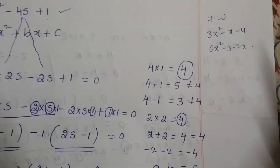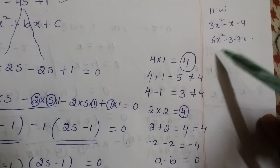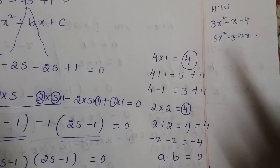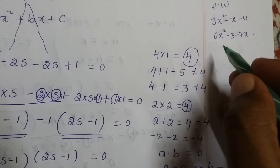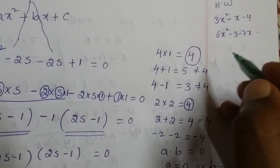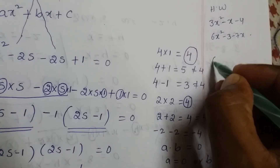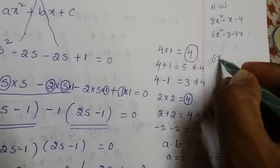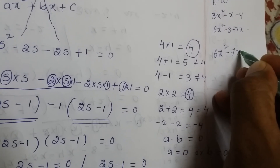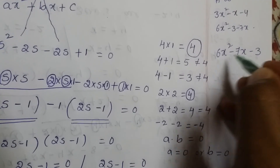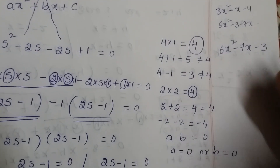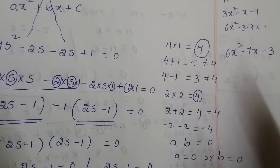Now try these practice questions: 3x² minus x minus 4, and 6x² minus 3 minus 7x. For the second one, first change it into standard form: 6x² minus 7x minus 3, which is ax² + bx + c. Now you can solve the problem.